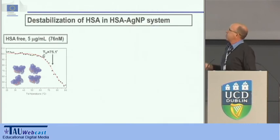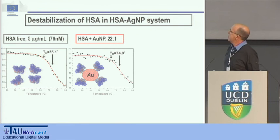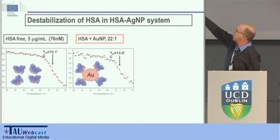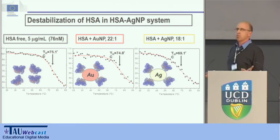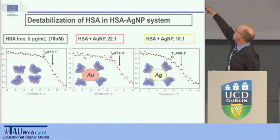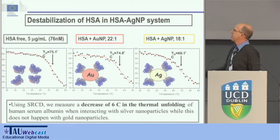We did this with free human serum albumin and obtained a melting temperature around 75 degrees. We then repeated this with gold nanoparticles at a ratio of about 20 protein molecules to 1 nanoparticle — and the process is basically very similar, with a melting temperature around 75 degrees, the same within experimental error. When we repeated this with silver nanoparticles, the situation is quite different: we get a melting temperature of 69 degrees, and the slope of the process is also quite different. With this experiment we were able to measure a decrease of 6 degrees in the thermal stability of human serum albumin interacting with silver nanoparticles, while this does not happen with gold nanoparticles.